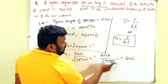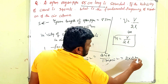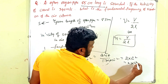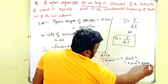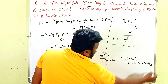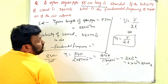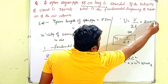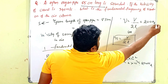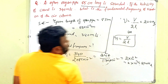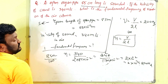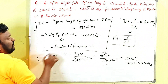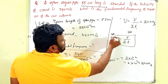Bringing 10⁻² to the numerator gives 10², which means 2 × 10² = 200. Therefore, the fundamental frequency is 200 Hz. So this is a very simple problem — one formula and easy substitution.